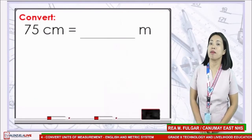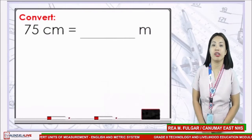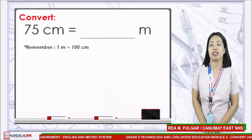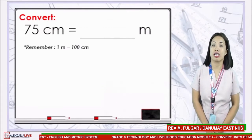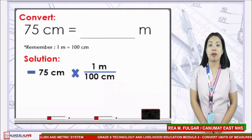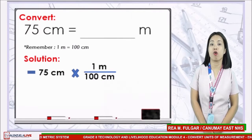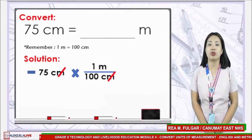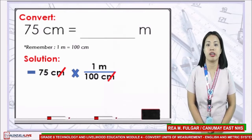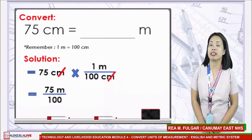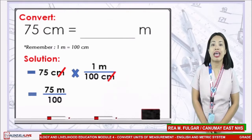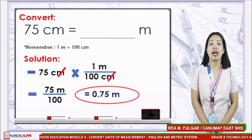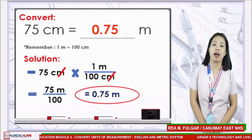Next example: convert 75 cm to meters. In 1 meter, it is equivalent to 100 cm. We just need to multiply 75 cm by 1 meter over 100 cm, and cancel the common unit, which is cm. Continue multiplying 75 by 1 and divide by 100. Our answer is 0.75 meters.